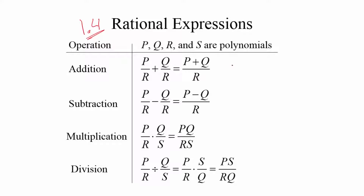For example, if you have 1 half plus 3 half, you have the same denominator. The common denominator is 2 and the numerator would be 1 plus 3, which is equal to 4 half, which is equal to 2.